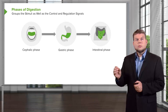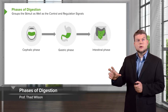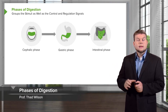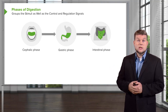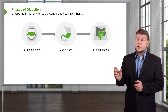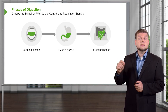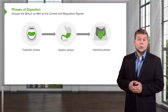Now that we have the overall functions of the GI system down, let's talk about the various phases of digestion. The phases are going to be very important for controlling things like secretions, so let's go through these in order.